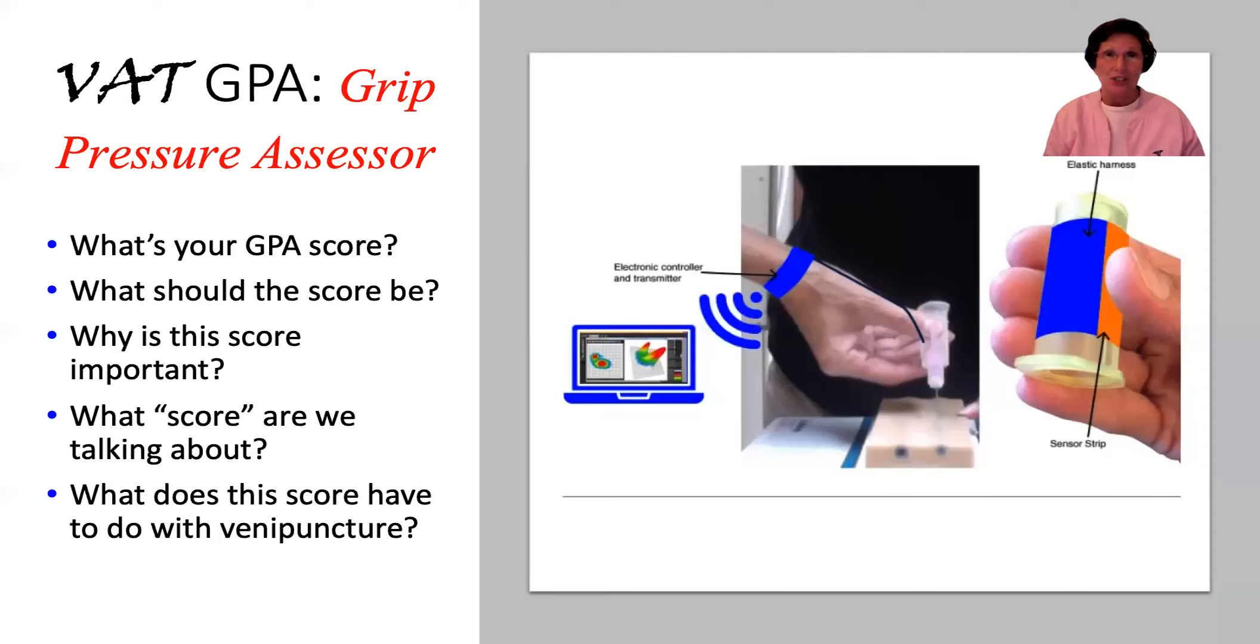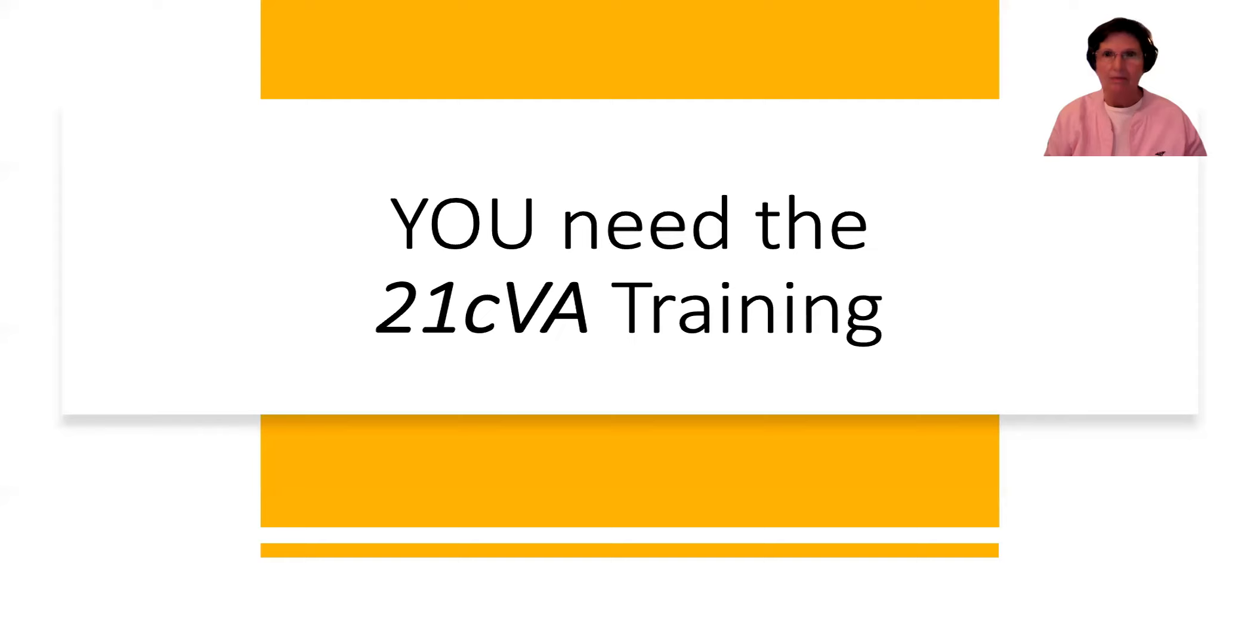So what's your GPA score? What should the score be? Why is the score important? Hopefully this presentation gave you some clues and an indicator. And maybe even inspiration to get your GPA score. Get your grip pressure assessed. Actually, you need the 21 CVA training. The VAT method. The new, the next generation venipuncture.